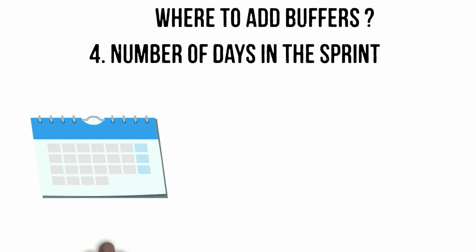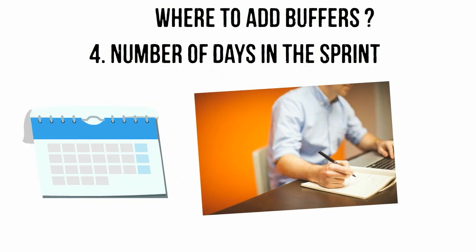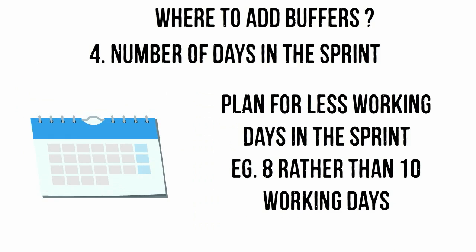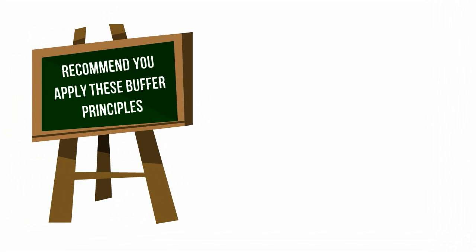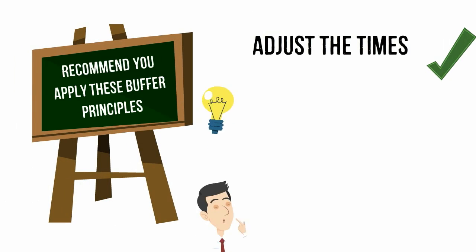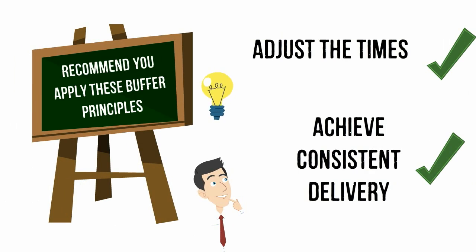4. The number of days in the sprint are usually modified to reflect planning, a known consistent amount of time for meetings and recurring impediments — for example, 8 working days rather than 10. I recommend that you apply the principles above and adjust the times until you achieve a level of consistent delivery.